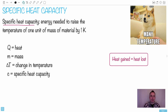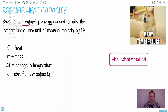Specific heat capacity is formally defined as the energy needed to raise the temperature of one kilogram of a substance by one degree Kelvin. That definition doesn't really make much sense to a lot of people, but it comes from an equation that's going to help us.